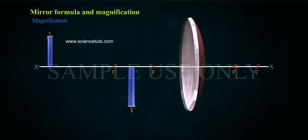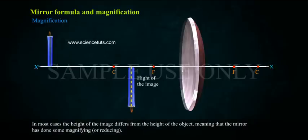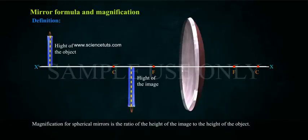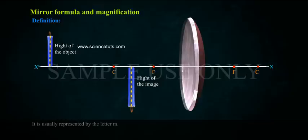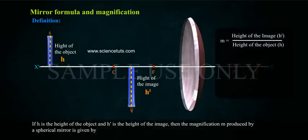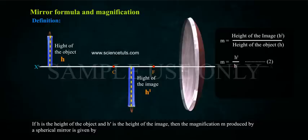Magnification. In most cases, the height of the image differs from the height of the object, meaning that the mirror has done some magnifying or reducing. Magnification for spherical mirrors is a ratio of the height of the image to the height of the object. It is usually represented by the letter M. If H is the height of the object and H' is the height of the image, then the magnification M produced by a spherical mirror is given by M = H'/H.